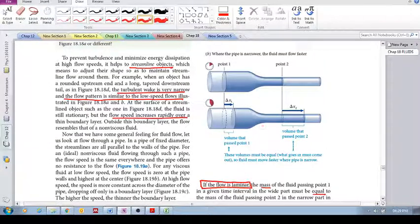Simply because of the geometry. If this delta x2 is longer than delta x1, then it means that the fluid has sped up.